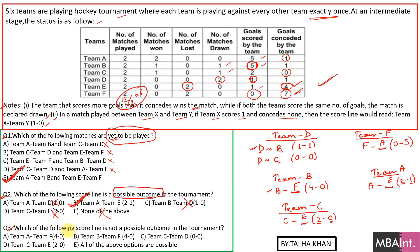For question three — which score line is not a possible outcome? Option A: A and F, four comma zero. We've established that A and F's score is three-zero, not four-zero, so this is not a possible outcome and is the correct answer. Checking the others: B and F four-zero — possible; C and D zero-zero — possible; C and E two-zero — possible. Only option A is not possible, so the correct answer is A.